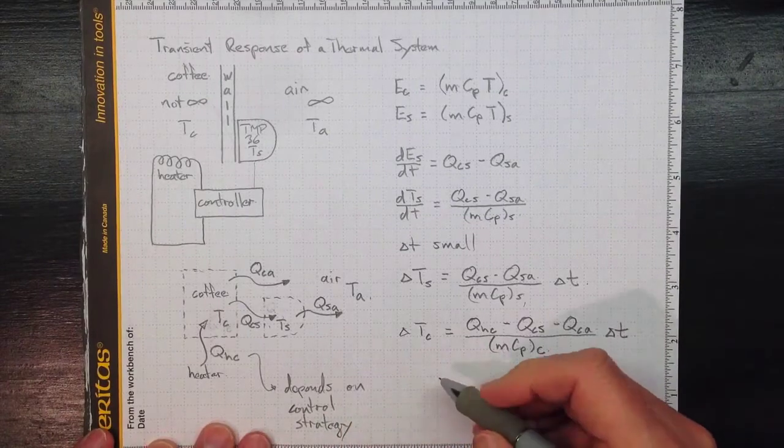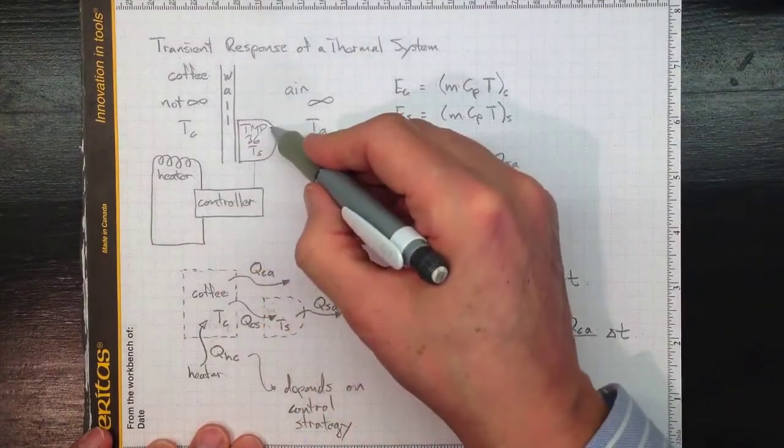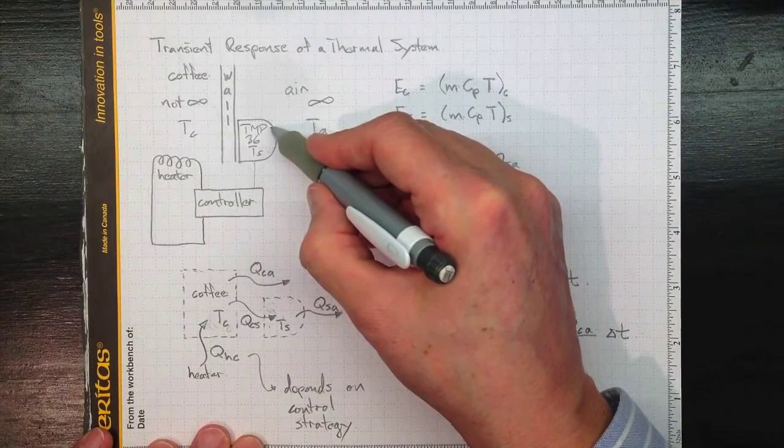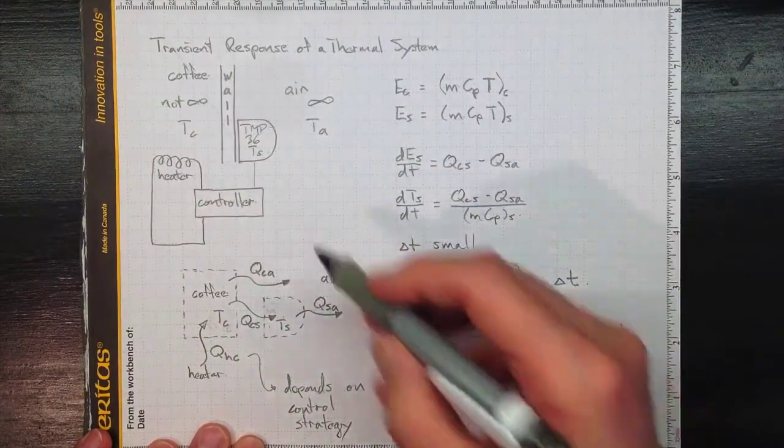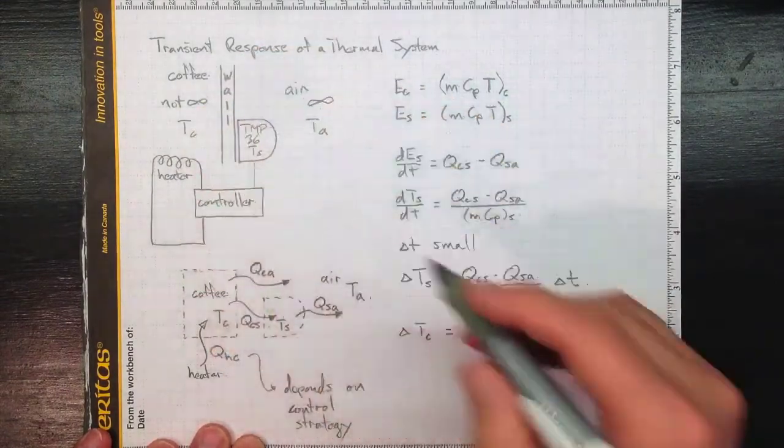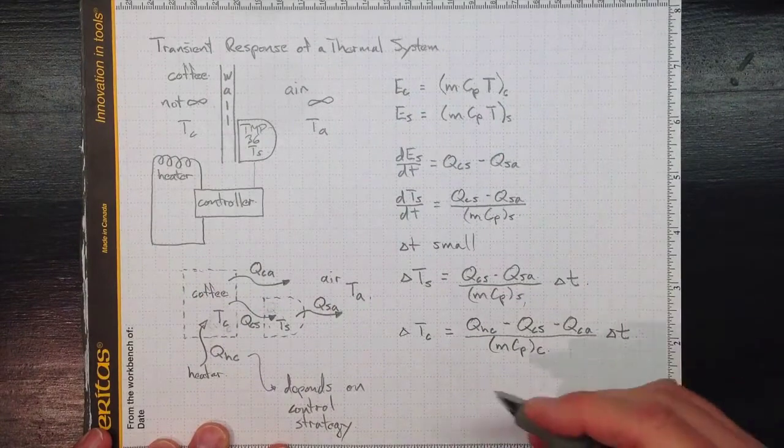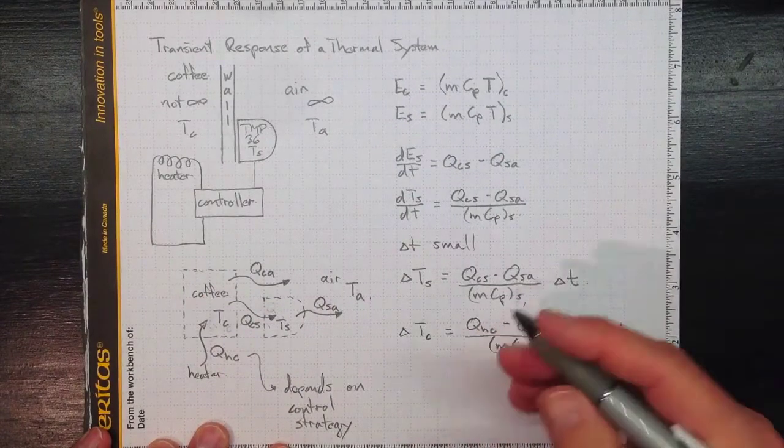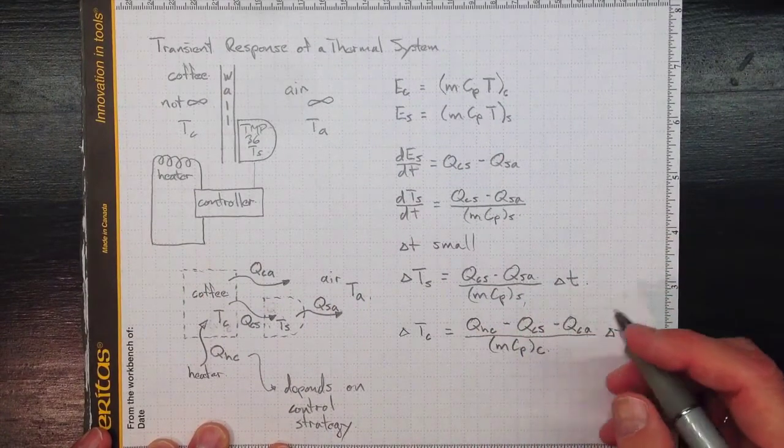So our control strategy might be something as simple as turn the heater on whenever the temperature registered here is too cold and warm the coffee back up. Then when the coffee warms up enough, turn it off again. That's a fairly simple control strategy, one that's used with household thermostats and things like that.